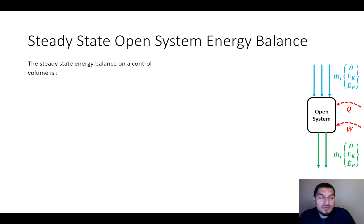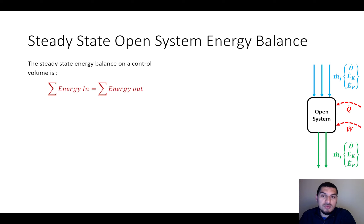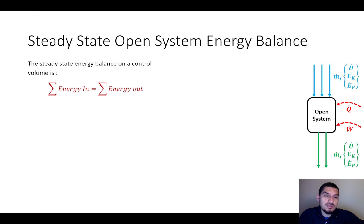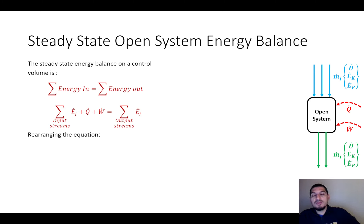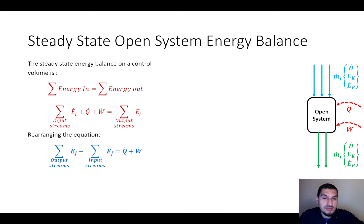These are the types of energy in our control volume. When we write the energy balance equation for steady state, there is no accumulation, and for energy balance the generation and consumption cancel each other. So we have energy in equals energy out. The energy in includes the input stream energy plus heat and work, and the energy out is the summation of the three terms. Rearranging, we get: summation of energy of output streams minus summation of energy of input streams equals Q plus work.